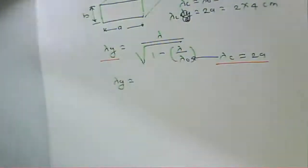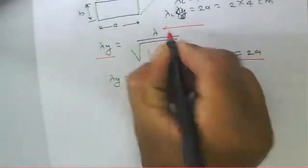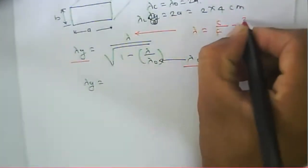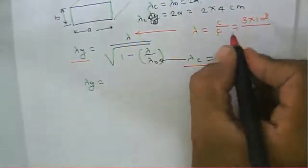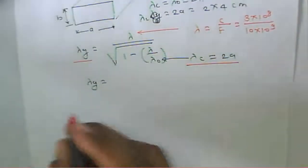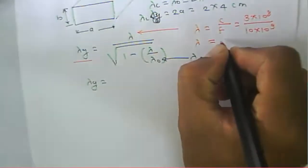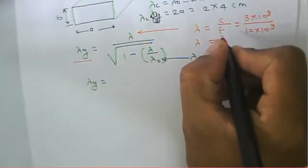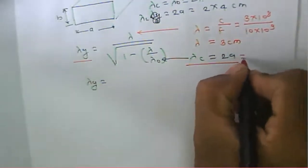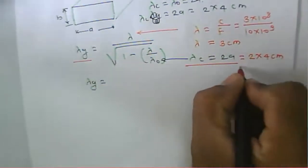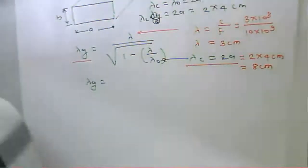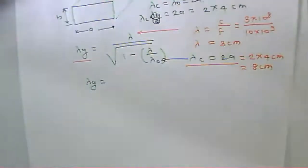Now, c equals 3 times 10 to the power 8, and with the given frequency we solve to get lambda equal to 3 centimeters. Lambda c is equal to twice a, that is twice 4 centimeters, which gives lambda c equal to 8 centimeters.